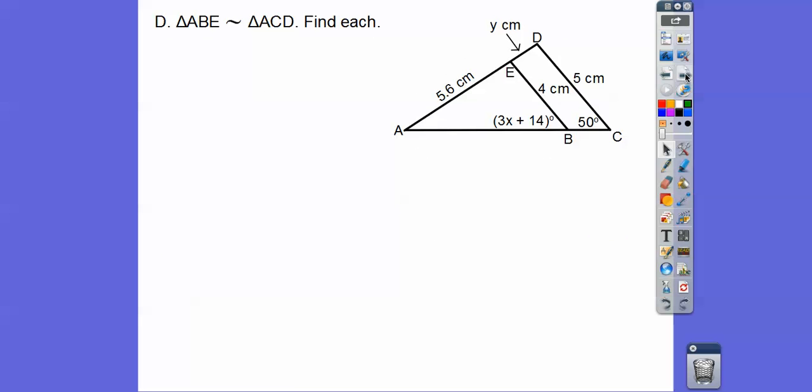So here we have these two triangles are similar right here. So triangle A, B, and then here's E right here, similar to triangle A, C, D. Let's get X. X is easy. This angle is going to equal this angle right here. See, angle B equals angle C. So we can't say angle B when we're looking at the picture. We'll have to say angle A, B, E because there's three angles here, this angle, this angle, and the straight angle right here. But at angle C, there's only one angle, so we can call it angle C right there. So those angles are equal, so we set them equal to each other. Subtract 14, divide by 3, we get X equals 12. That one's easy enough.